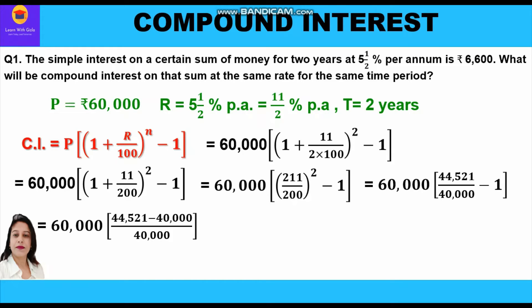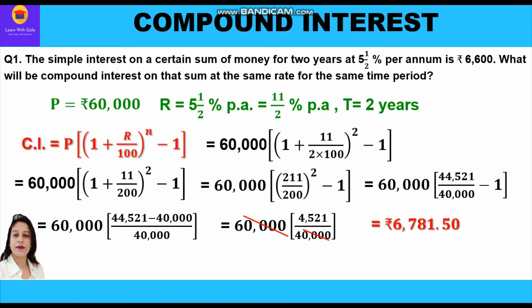Subtracting: 44,521 − 40,000 = 4,521. So we have 60,000 × 4521/40,000. Cancelling the zeros: 6 × 4521/4 = rupees 6,781.50. This is the compound interest on the principal of rupees 60,000 at the same rate for the same time period.